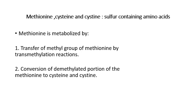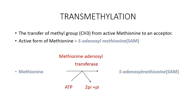Methionine will be catabolized or metabolized by two mechanisms. First, transfer of the methyl group of methionine by transmethylation reaction. Second, the conversion of the demethylated portion of methionine — that is S-adenosyl homocysteine — to cysteine and cystine. The definition for transmethylation is the transfer of a methyl group from methionine to an acceptor molecule, and this process is known as transmethylation.